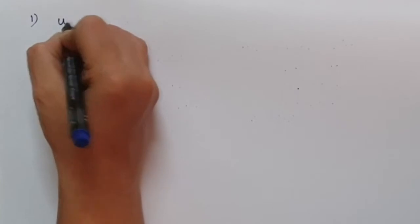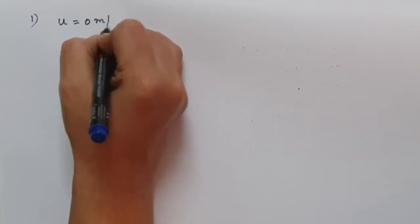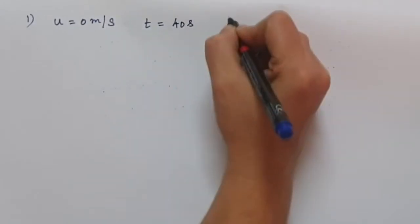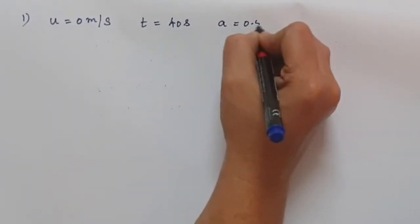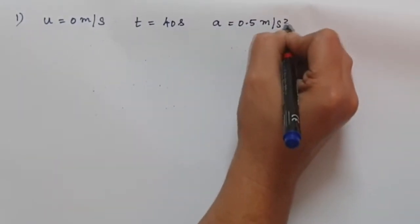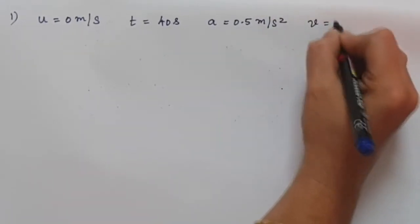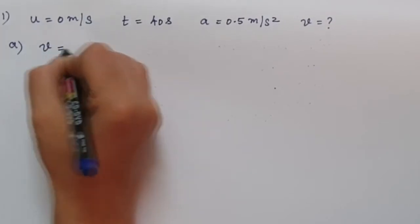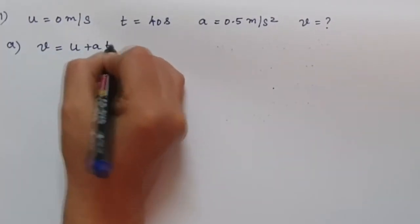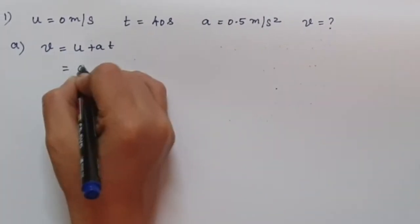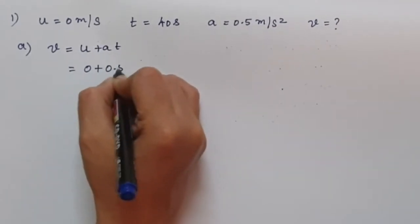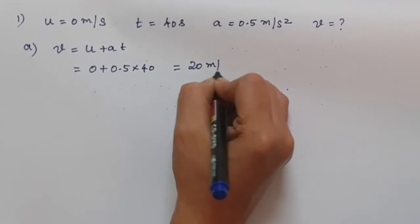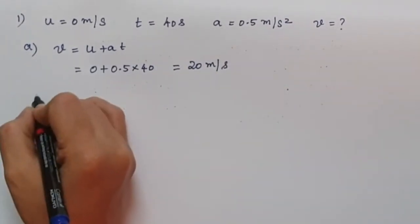In the first question, we are given that the initial velocity is 0 m/s, the time is 40 seconds, and the acceleration is 0.5 m/s². We have to find the final velocity. For part a, using v = u + at, substituting: v = 0 + 0.5 × 40, which gives us 20 m/s.